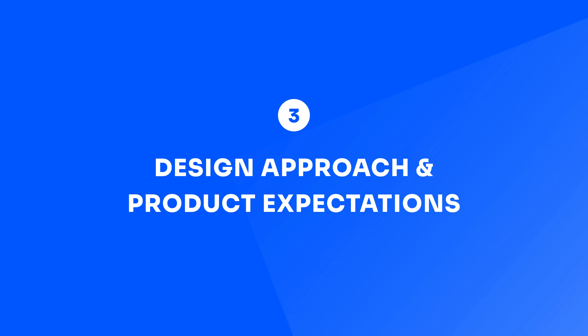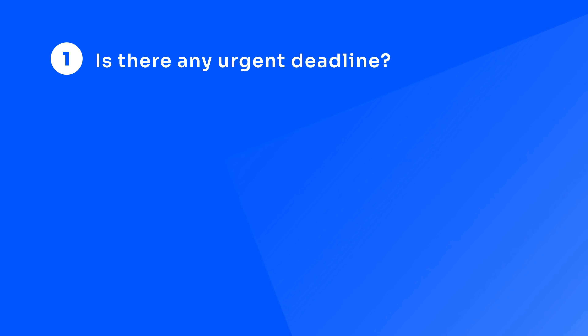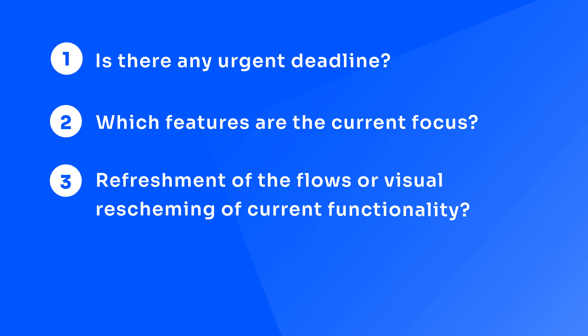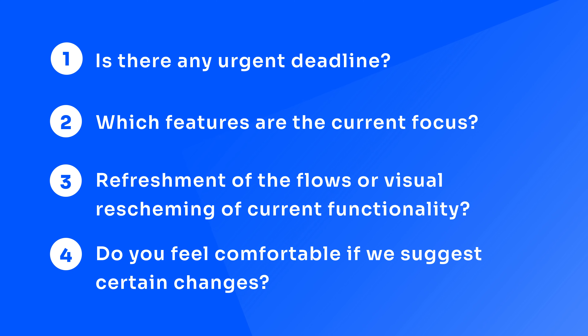Next, let's talk about aligning the design approach with the product expectations. As designers, we need to understand your vision for the user experience development of your product. After understanding the big picture, we ask things such as: Is there any urgent deadline we need to know about? Which features are the current focus of your project? Are you looking into a refreshment of the flows or more of a visual reskinning of your current functionality? Do you feel comfortable if we suggest changes such as renaming sections and regrouping functionality to improve how your users navigate through your current platform? With questions like these, we look into aligning our design approach with the project's expectations, allowing us to determine whether we can push the visual boundaries or if it is better to work closely to the existing implementations.